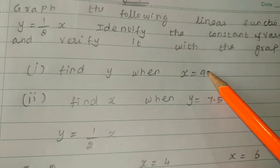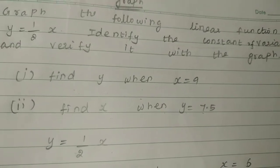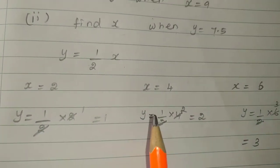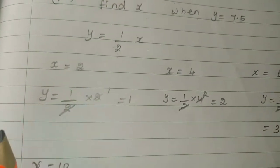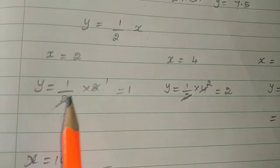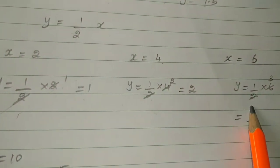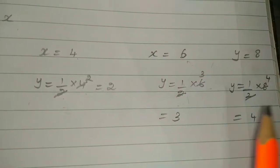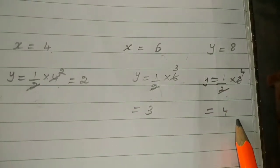The linear function equation is y equal to 1 by 2x. For x values, I am assuming even numbers because multiples of 2 are easy to solve. When x is equal to 2, y equal to 1 by 2 into 2, which is 1. When x is equal to 6, y equal to 1 by 2 into 6, which is 3. When x is equal to 8, y equal to 1 by 2 into 8, which is 4.